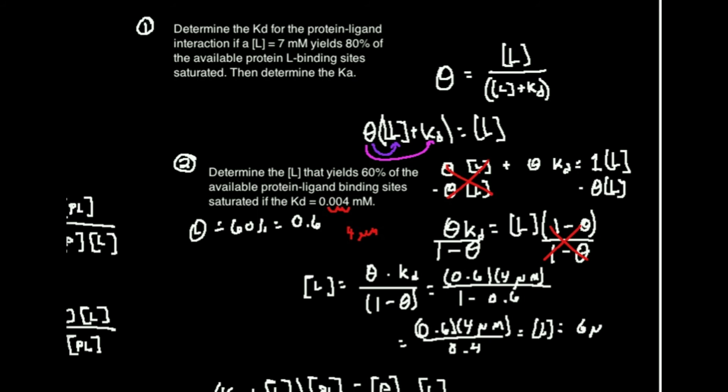And the ligand concentration that will yield 60% of binding sites occupied with this Kd, the ligand concentration is exactly 6 micromolar. And that is your answer right there.